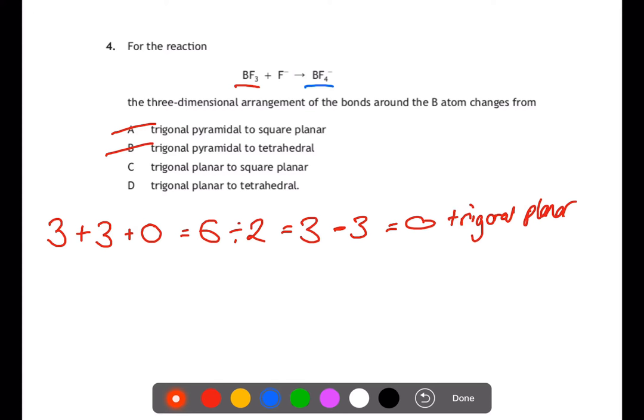If we look at BF4 minus we have three electrons. We have four things that we're attaching and we're going to add one for the negative charge. So overall we have eight. If we divide that by two to get electron pairs we have four. There are four things attached so we have no lone pairs. This means that we end up in a tetrahedral arrangement. So D is our answer.